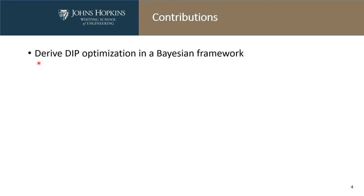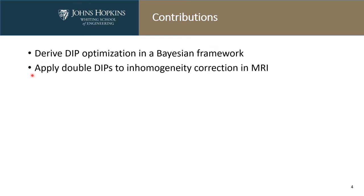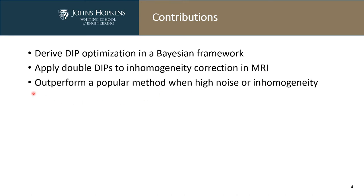The first contribution of this work is that we explain deep image priors in a Bayesian framework. The second is that we apply double deep image priors to inhomogeneity correction in MR images. We found that our proposed method can outperform a popular inhomogeneity correction method when the noise or the inhomogeneity is high.